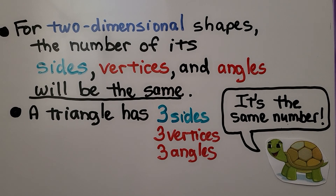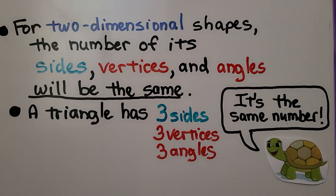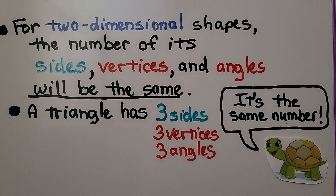For two-dimensional shapes, the number of its sides, vertices, and angles will be the same. A triangle has three sides, three vertices, three angles. It's the same number — three.